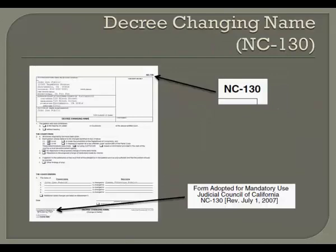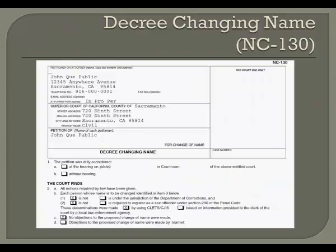The next form you need will be the Decree Changing Name, Form NC-130. The most recent revision to this form is July 1, 2007. In the top caption where it says Petitioner or Attorney, print your full present name, address, and telephone number, and where it says Attorney for, print in pro per. If you are changing the name of a child, it might also include your present name as well as the present name of the other parent, if the other parent also signed the petition.